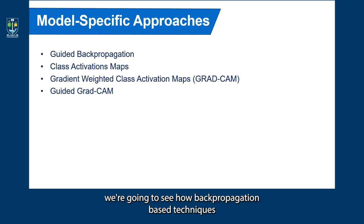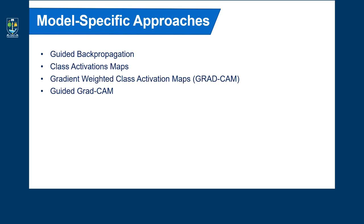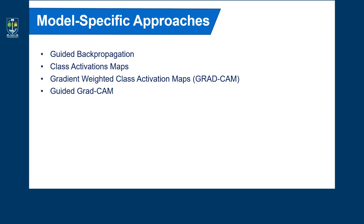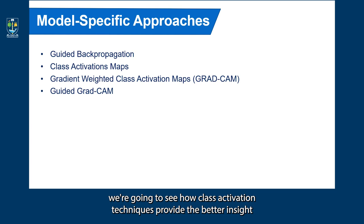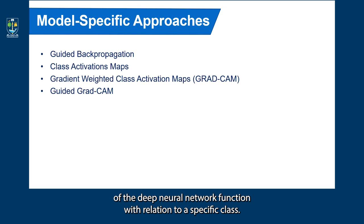For this reason we're going to see how backpropagation-based techniques visualize gradients with respect to the input — let's say an image, a time series, or an ECG. Backpropagation-based techniques are difficult to interpret for specific decisions alone, so we're going to see how class activation techniques provide a better insight of the deep neural network function with relation to a specific class.